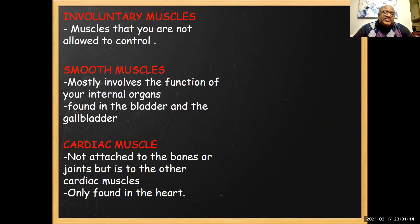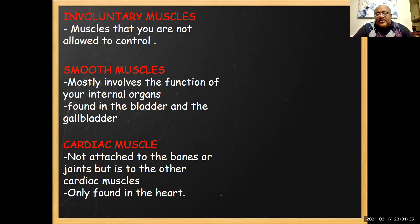Involuntary muscles you can't control — smooth muscle mostly involves the function of internal organs. It's found in the bladder and the gallbladder. These are things you don't have to think about. The cardiac muscle is not attached to any bones or joints, but it is connected to other cardiac muscles, and it's only found in the heart. There's a whole sack of muscle and tissue that the heart sits in, just to the left center of your chest.